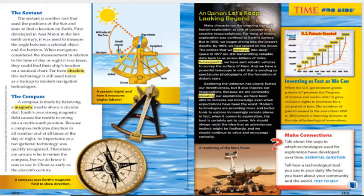We should always resist the idea that an adventurous instinct might be foolhardy, and we should continue to value and encourage curiosity. Looking at the chart 'Inventing as Fast as We Can': when the U.S. government grants patents to promote the progress of science and useful arts, it gives exclusive rights to inventors for a set period of time. The numbers of patents issued from 1850 to 2010 reveal a stunning increase in the rate of technological innovation. Technology is increasing day after day — every period has its own tools developed in a different way.